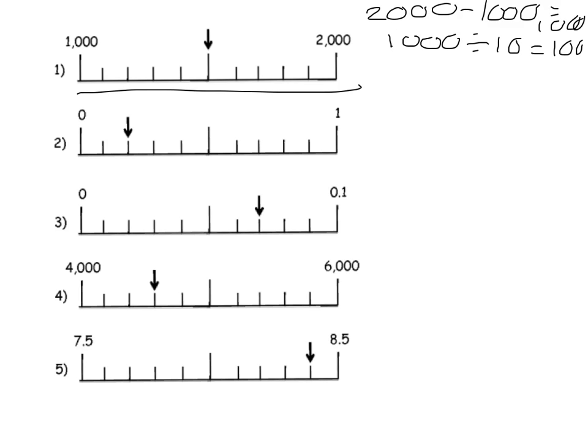So each jump is worth 100. To work out where this arrow is, I would count: 100, 200, 300, 400, 500. So the arrow is pointing at 500.